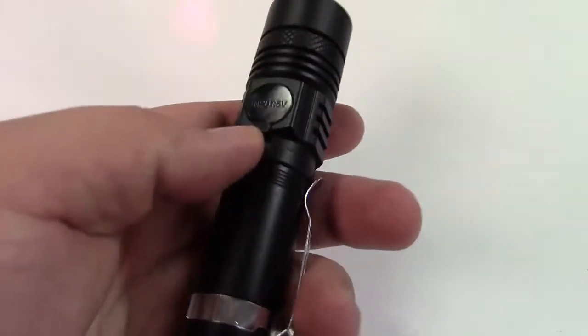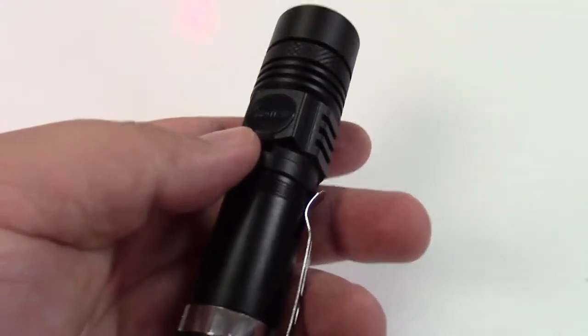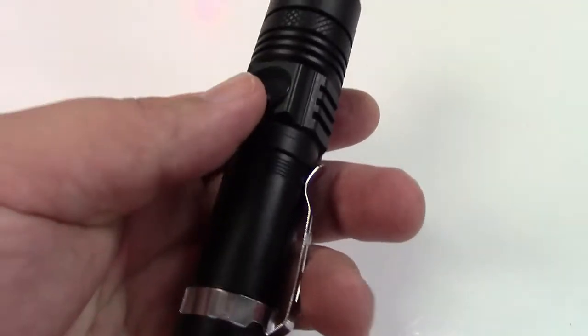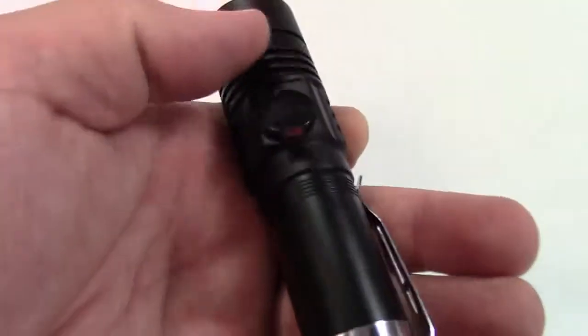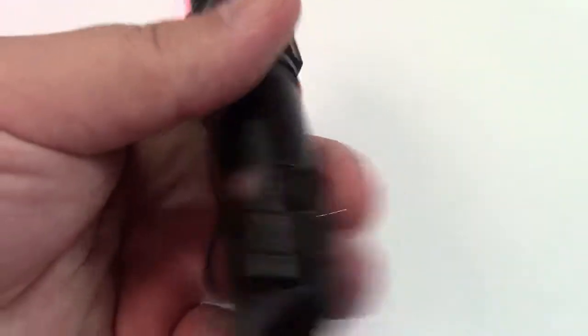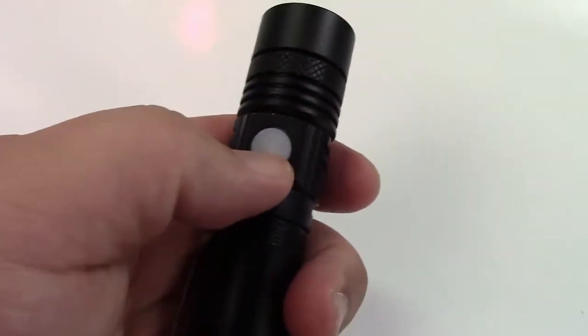The flashlight is IPX5 rated, so it's waterproof to a degree, dustproof, sandproof, snowproof. There's a rubber cover over the USB charging port like that to keep everything nice and sealed.